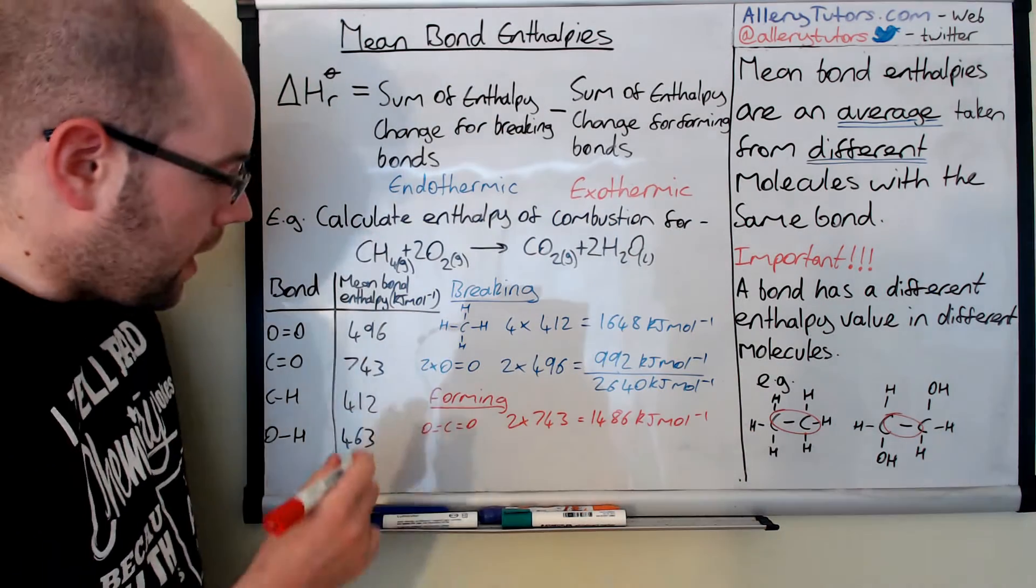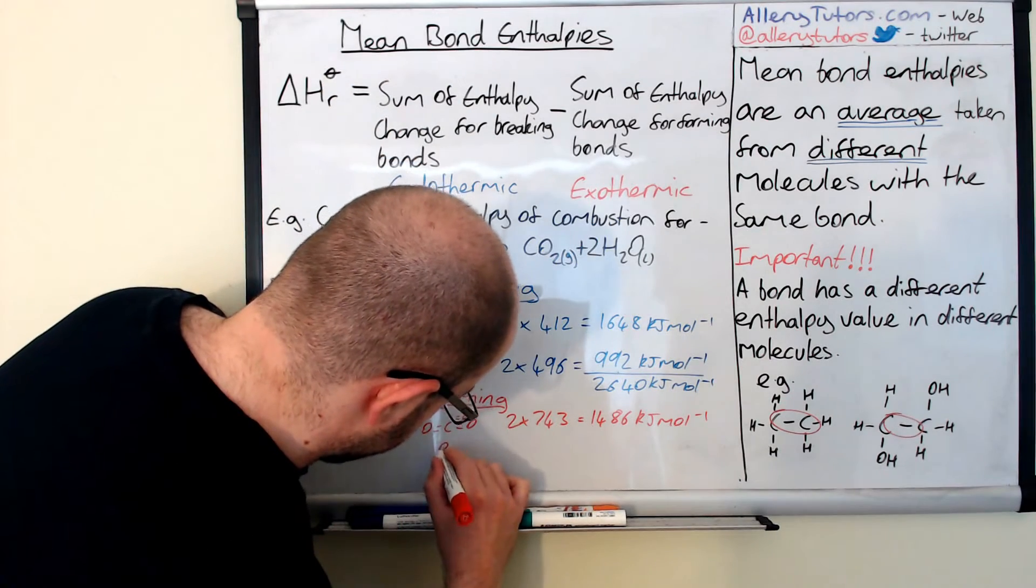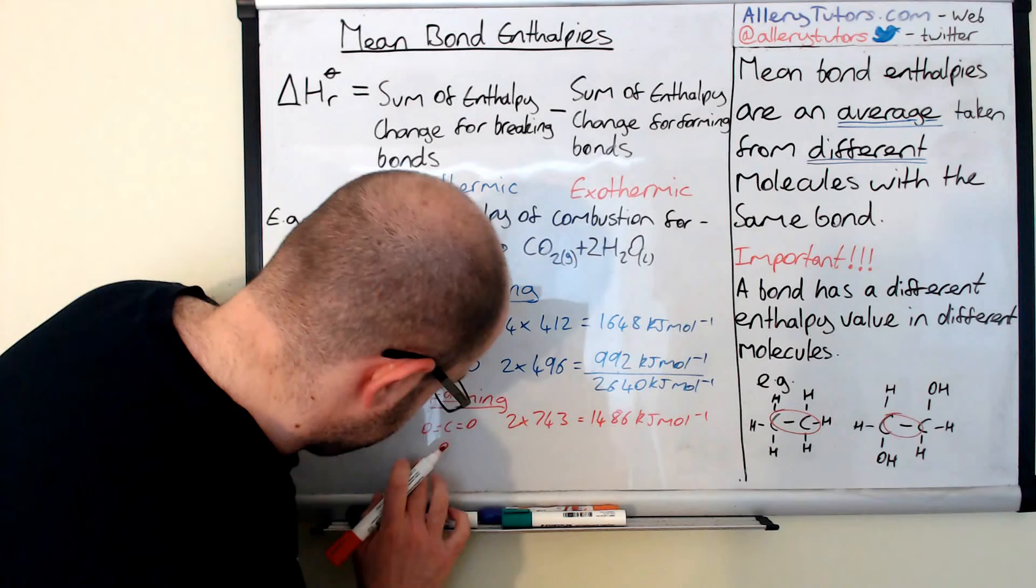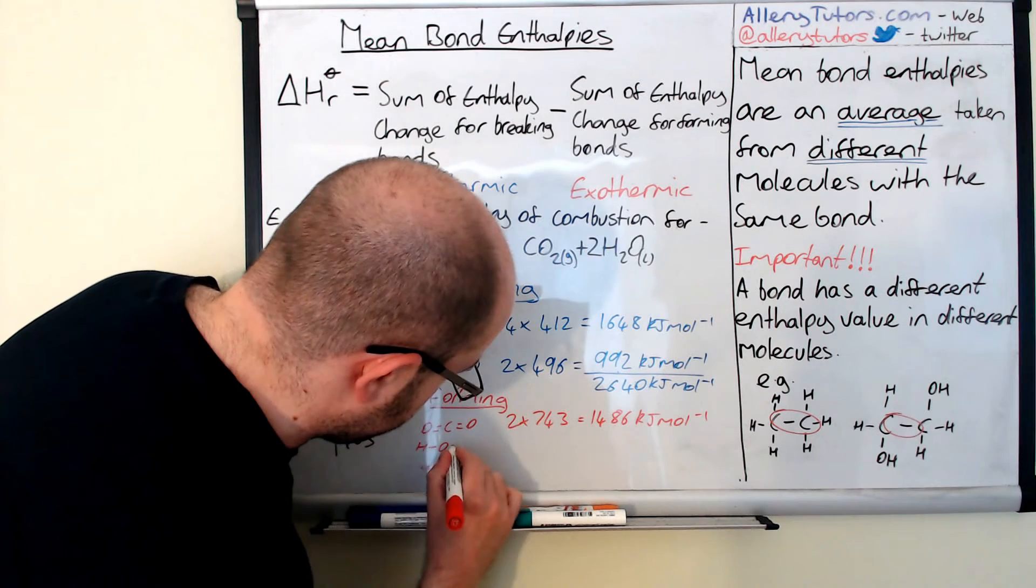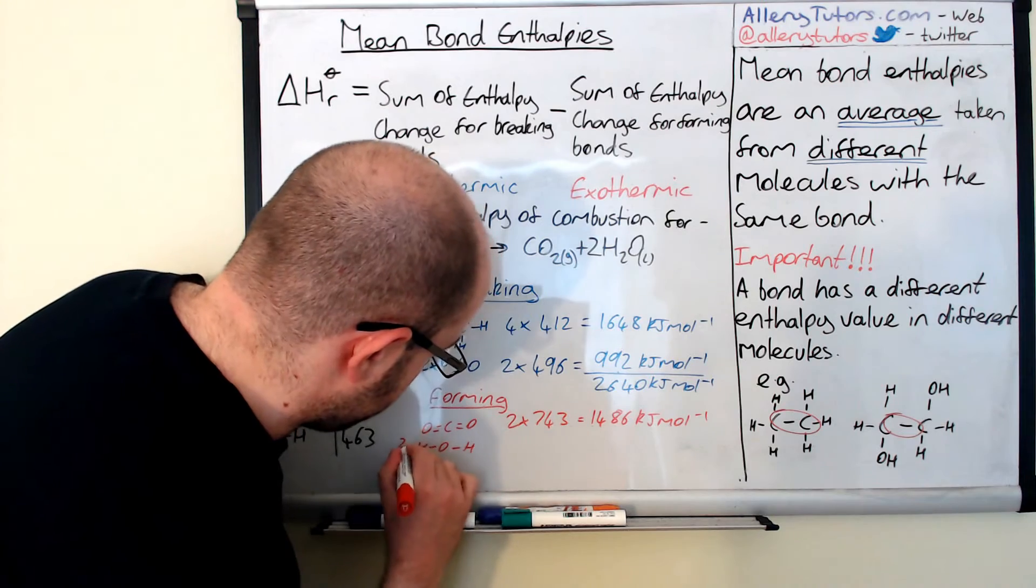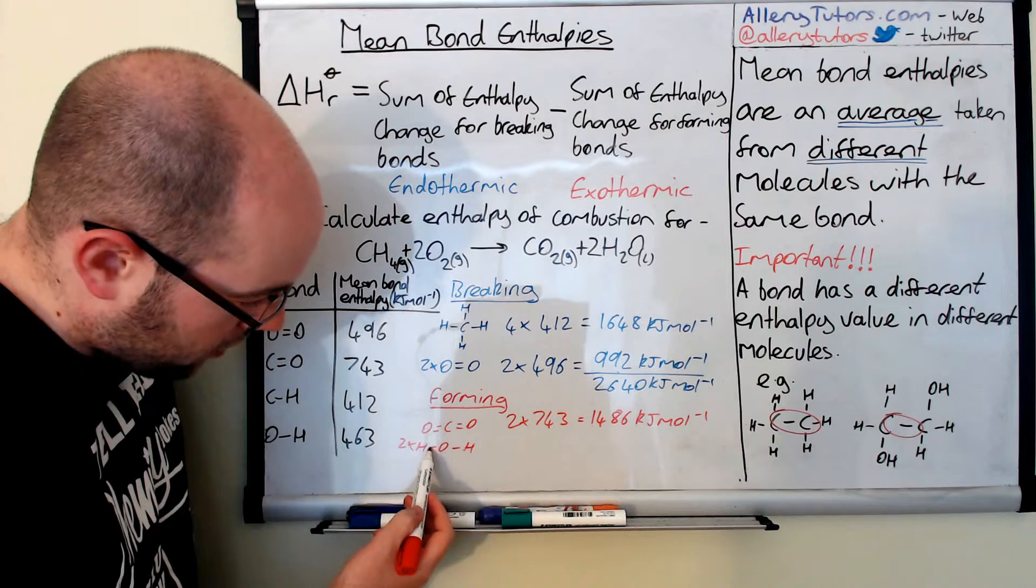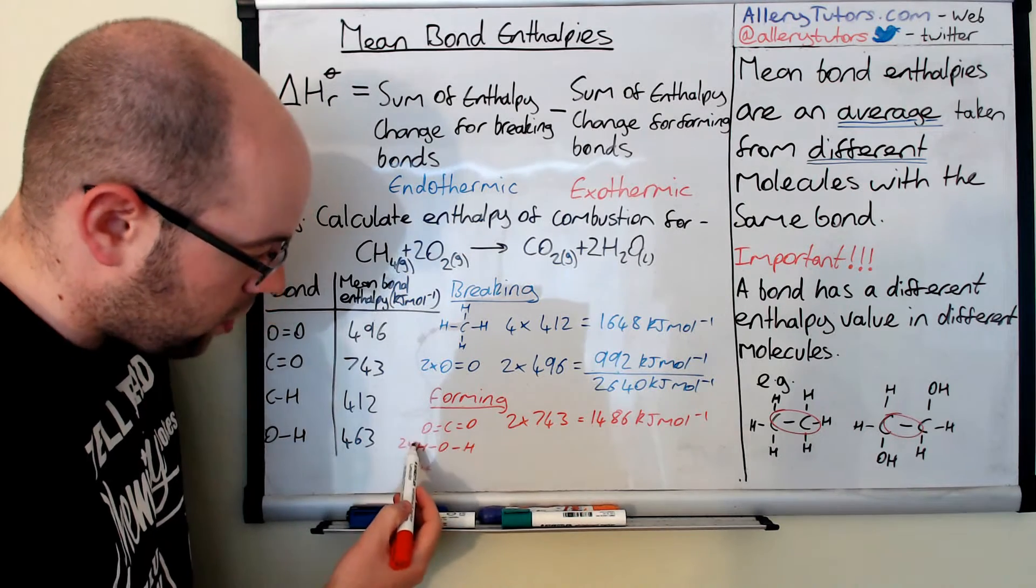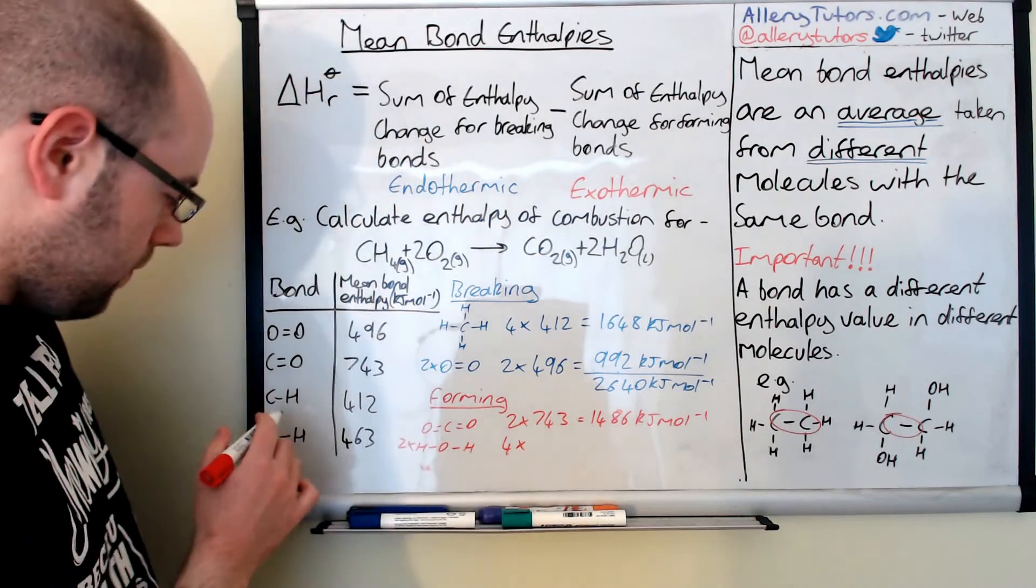We've also got two molecules of water as well. These are not a true reflection of the bond angles, but you can see we've got two lots of water. We have an O-H and an O-H, but we've got two lots of them, so that gives us a total of four lots of O-H.